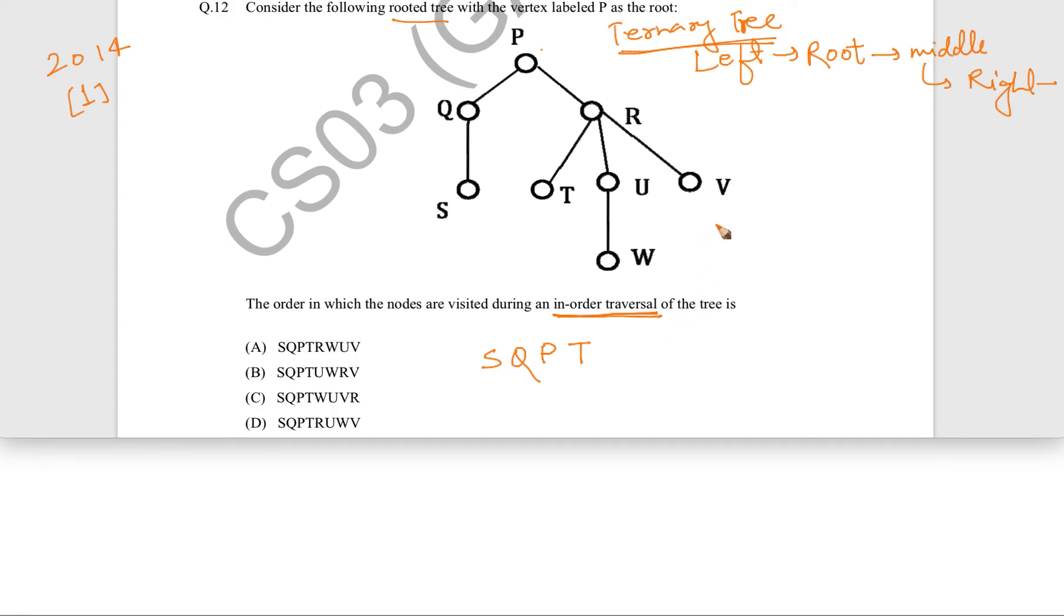Now, after that, we can go to root. So after T, we are going to go to root. Then we are going to traverse the middle. Now in the middle, for U, there is only one child, W, and there is ambiguity whether it is left child or right child.